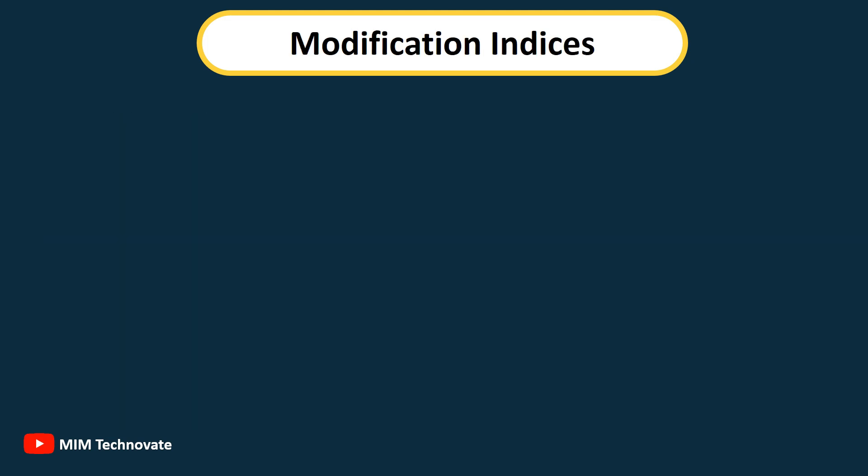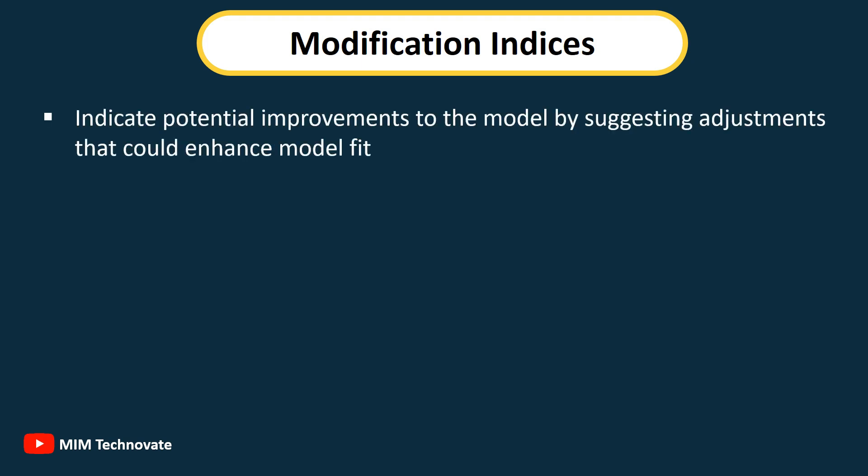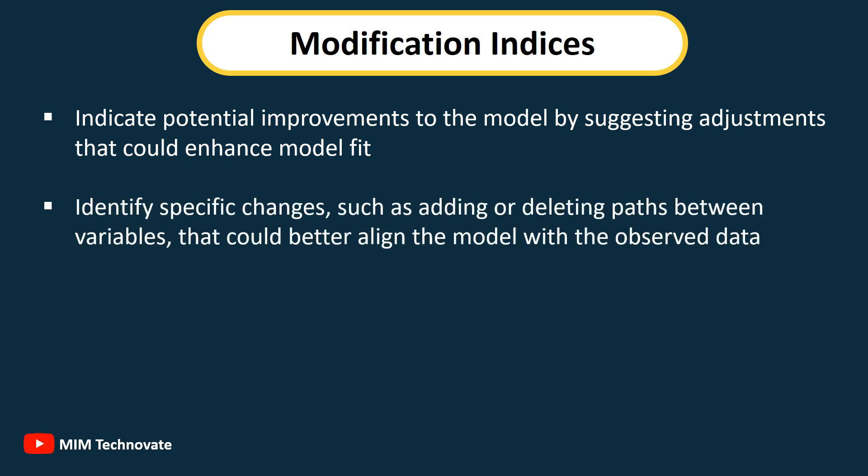Modification Indices: Indicate potential improvements to the model by suggesting adjustments that could enhance model fit. They identify specific changes, such as adding or deleting paths between variables, that could better align the model with the observed data.